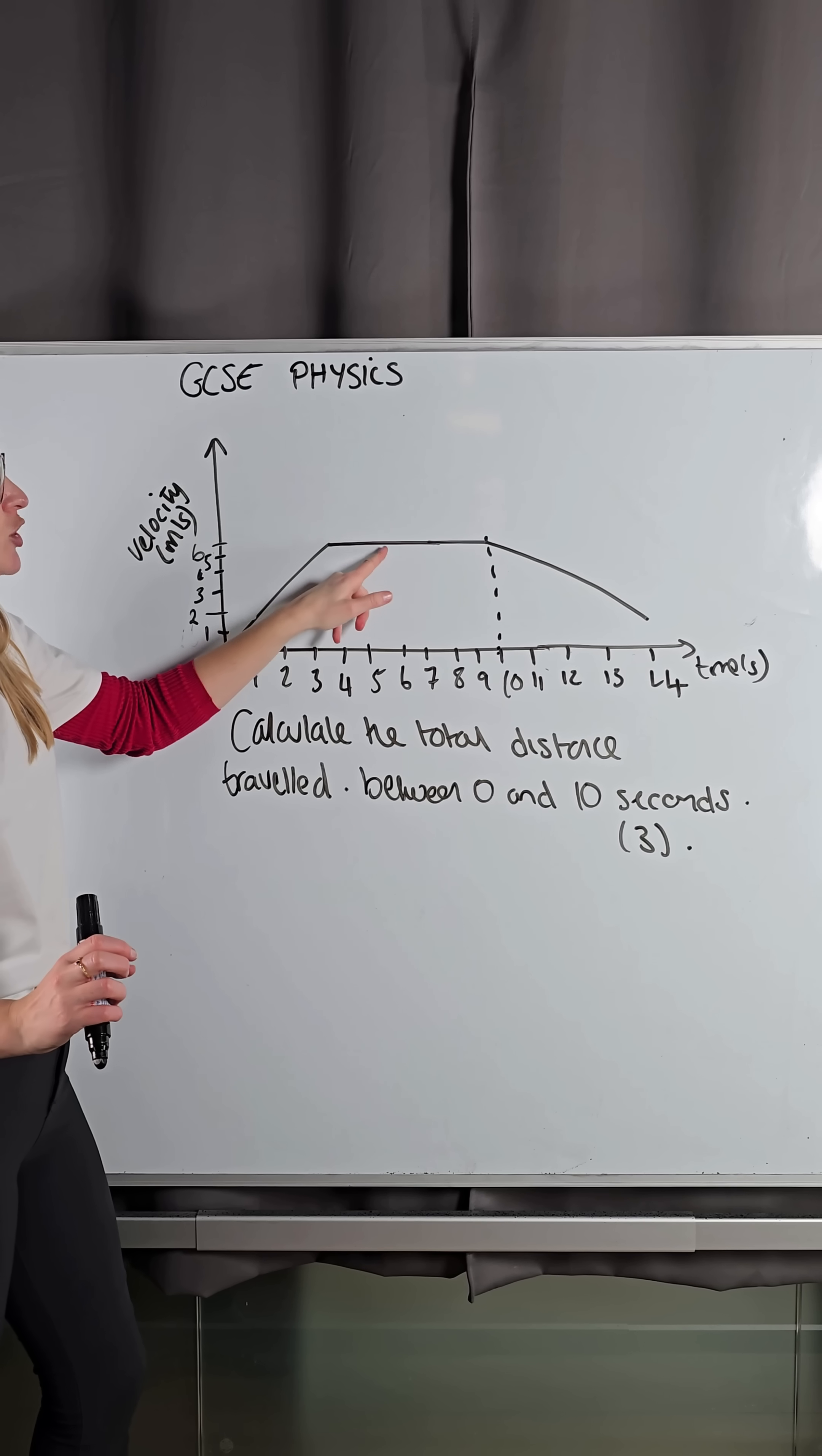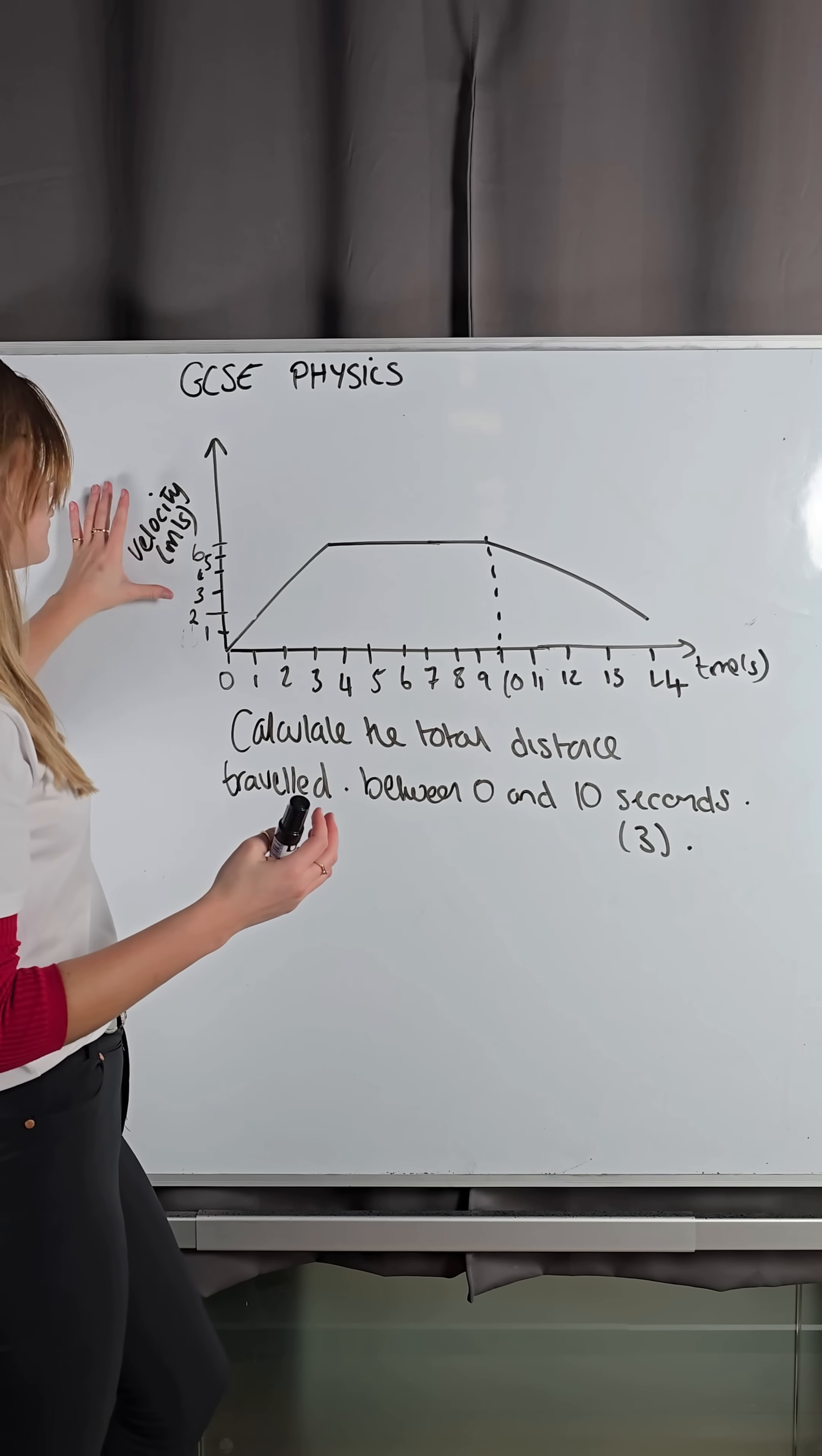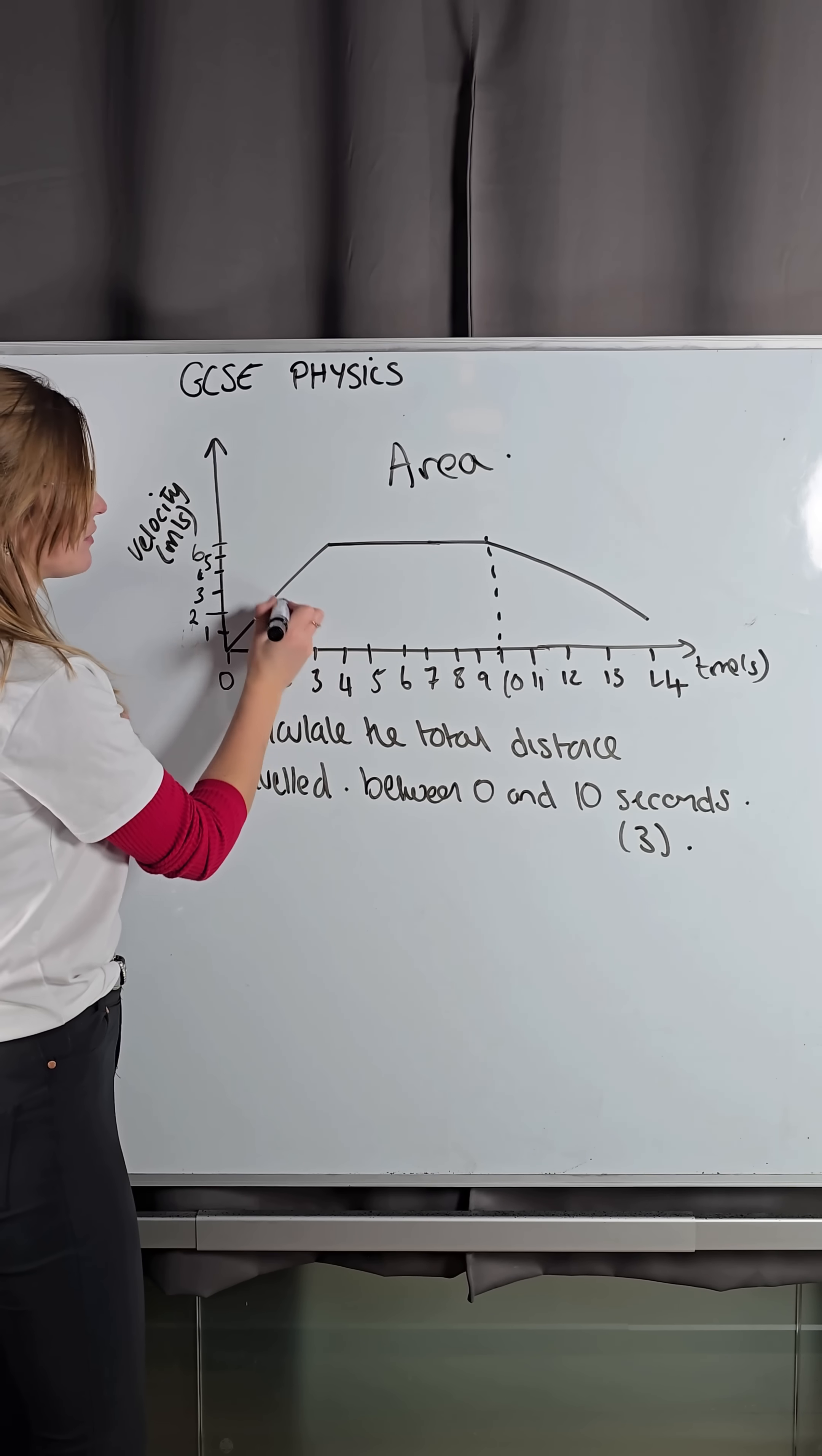Then my velocity stays the same, traveling at constant speed. And then my velocity decreases, sort of de-accelerating. Okay? But I only want the distance traveled between 0 and 10. Now, you need to remember, how do we find the distance traveled in a velocity time graph? Remember that is you need to calculate the area under the graph. So we need to find the area under this graph.